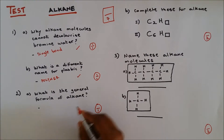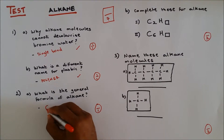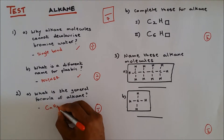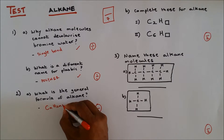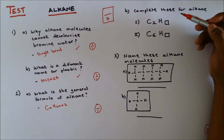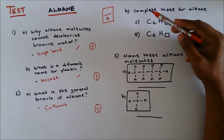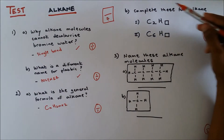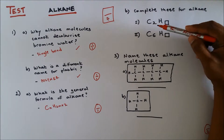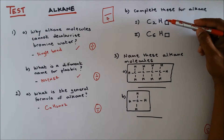The general formula of alkane is CnH2n+2. Question 2b: complete this table for alkane. You can see that the number on the hydrogen is missing, so you have to use the general formula to complete this.